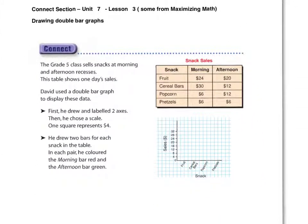All right, let's take a look at an example here. We have a grade 5 class that's selling snacks at morning and afternoon recess. This table shows one day's sale. So remember, this is a table, it's a chart, it is not a graph. It's a way to organize our information before we put it into a graph so we can more easily graph it. But when you are asked to draw a graph, showing a table is not drawing a graph.